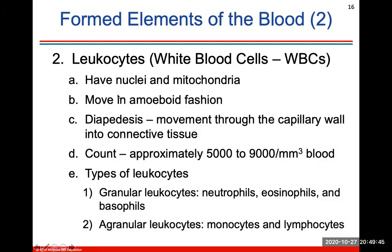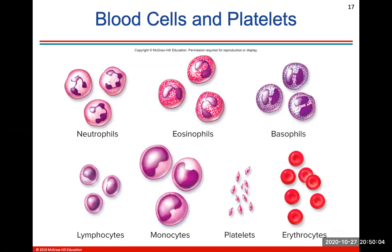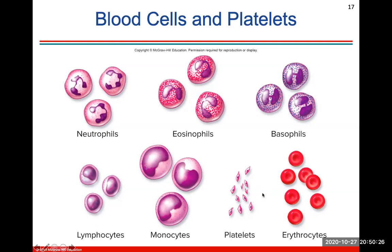Leukocytes are white blood cells. They do have a nucleus and mitochondria. There are different types — granular and agranular. The three types of granulocytes are neutrophils, eosinophils, and basophils, which have small granules. Monocytes and lymphocytes are the other two types of leukocytes. Platelets help to form blood clots, and erythrocytes are the red blood cells.